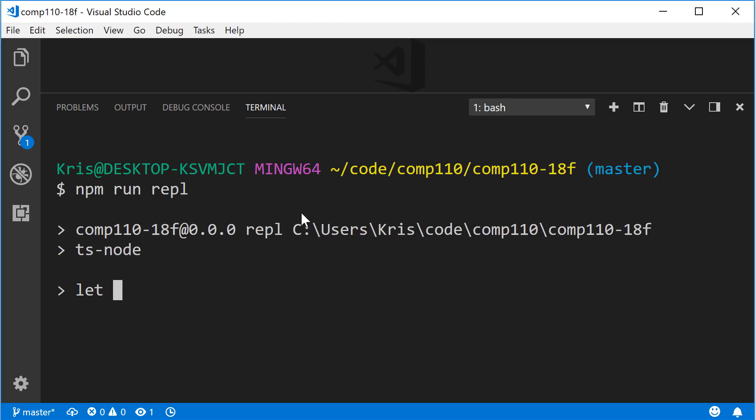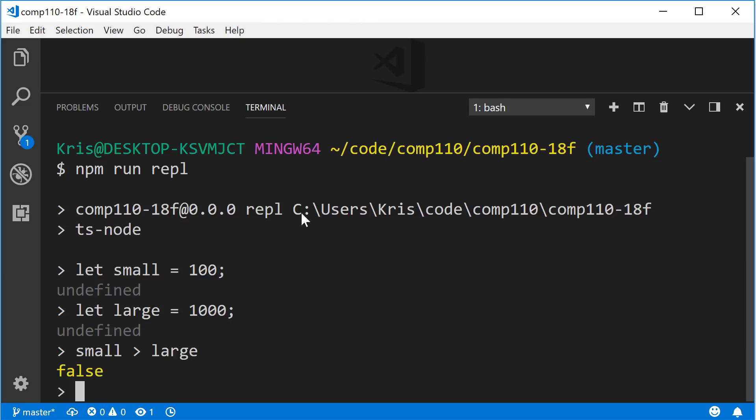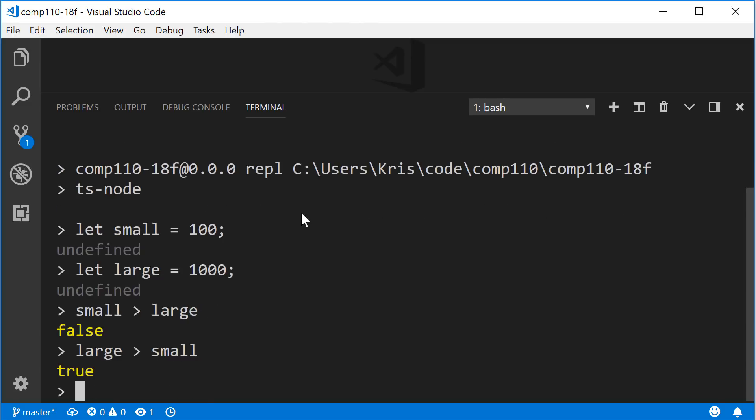We're going to declare two variables. Let small be a number variable that is assigned an initial value of 100, and let large be a variable that is assigned an initial value of 1000. How can we compare these two variables and the values that they store? Well, we can do that using relational operators. We can ask, is small greater than large? And we know that 100 is not greater than large, so this is a false statement. As soon as we ask the interpreter to evaluate that expression, we'll see that it's false. We could flip it around and say is large greater than small, and we expect that to be true. Sure enough it is.